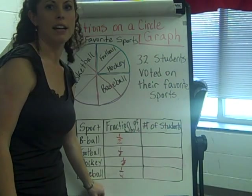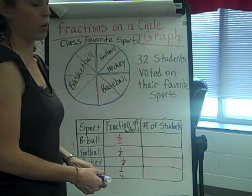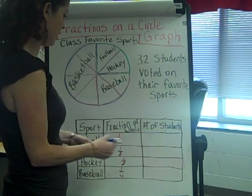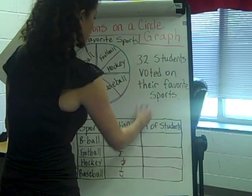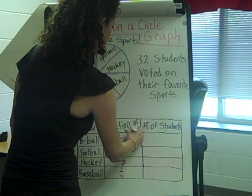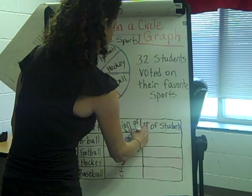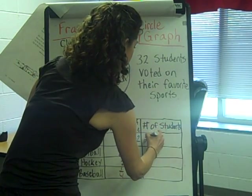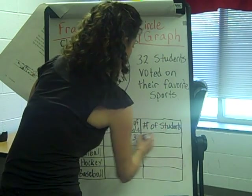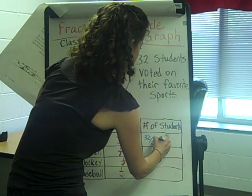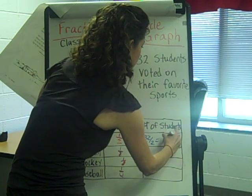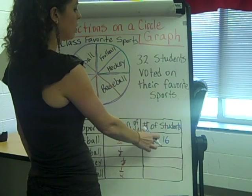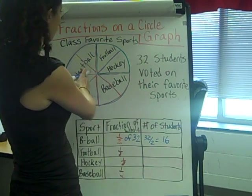That goes right back to finding the fraction of a set number, and our set number is thirty-two. So we go right back to one half of thirty-two, which is the same as thirty-two divided by the denominator of two, which equals sixteen. Sixteen students — half of thirty-two — voted for basketball.